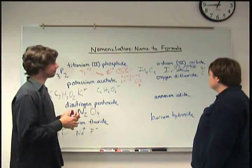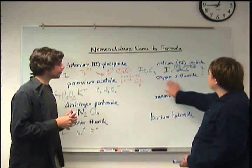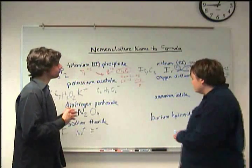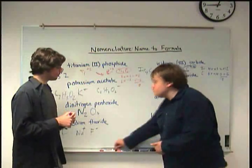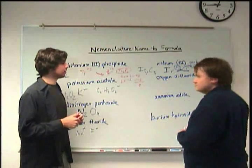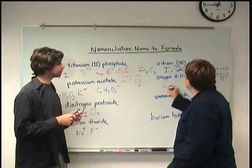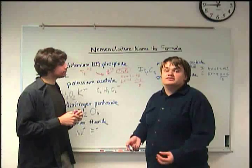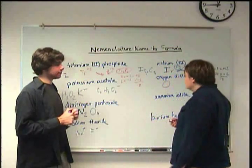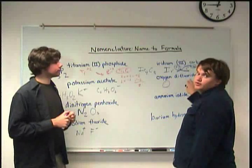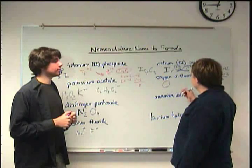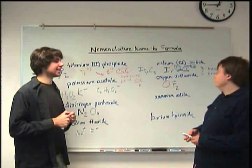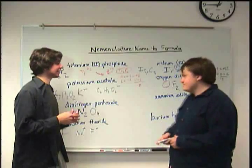Oxygen difluoride. Oxygen and fluorine are both non-metals, so it has to be covalent. I'm gonna use brown this time. Different colors are good. So oxygen, just an O. There's no prefix and it's the first element, so that means there's just one. And then difluoride—the di means there's two. It's fluoride. So it's just OF2.